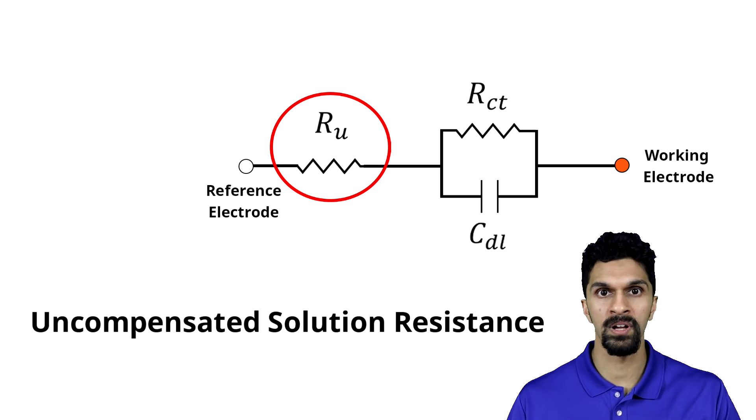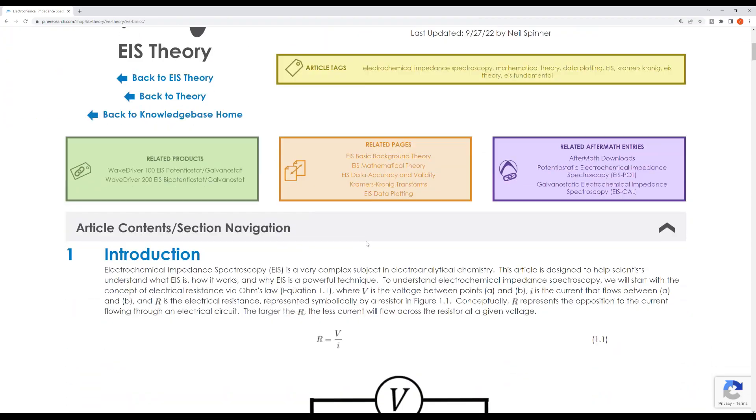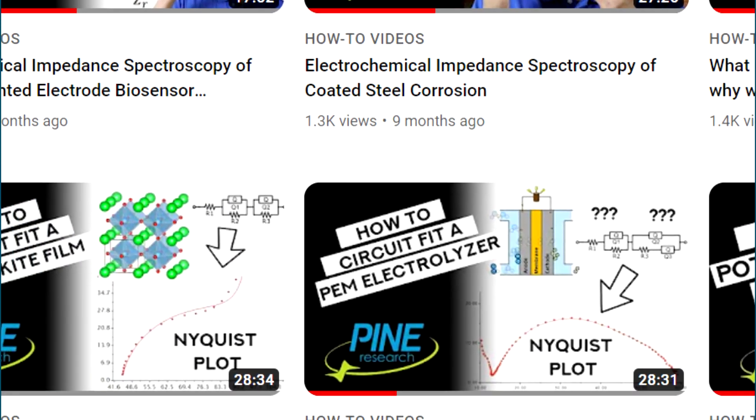The first technique we'll talk about is electrochemical impedance spectroscopy, or EIS for short. EIS is one of the most complicated techniques in all of electrochemistry and I probably can't give you a full description of EIS in just a video on determining the solution resistance. However, we will go over a variety of DC-based techniques to determine the solution resistance. If you're interested in learning more about EIS, we have a full YouTube video, a written article, and some advanced webinars on EIS.